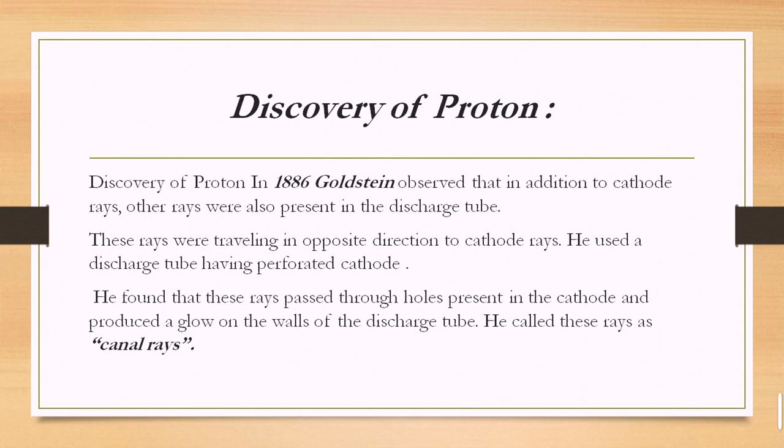We all know that after the discovery of the electron, the cathode rays were originated, and these were negatively charged particles. Scientists tried their best to perform various types of experiments to further qualify or further subdivide the structure of the atom.